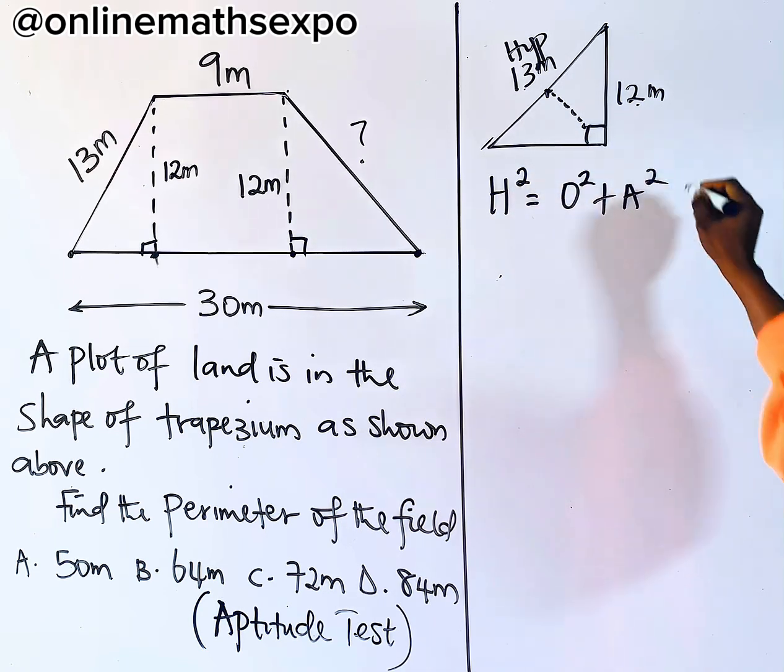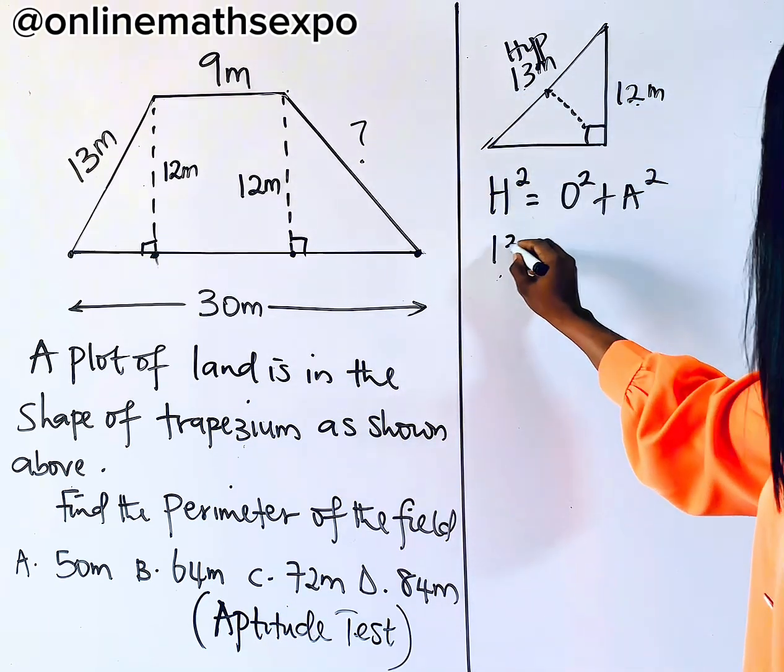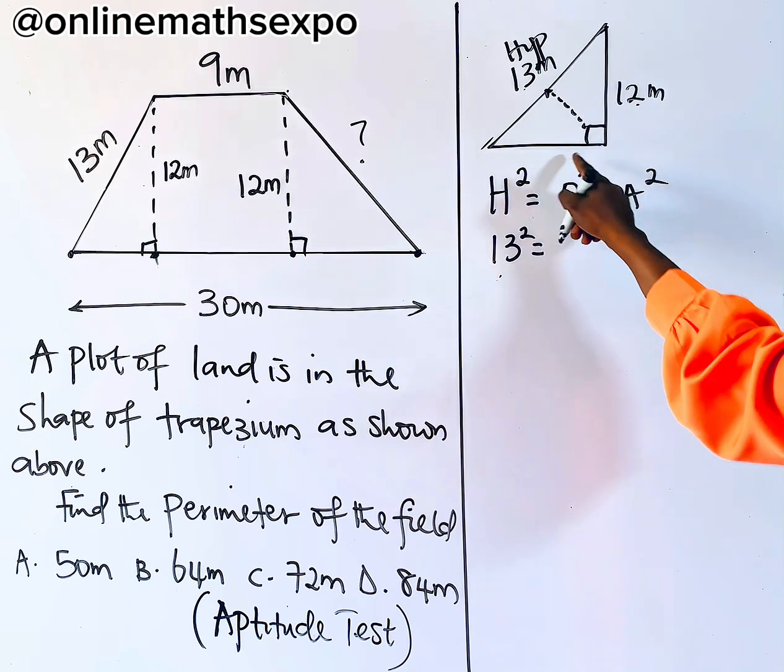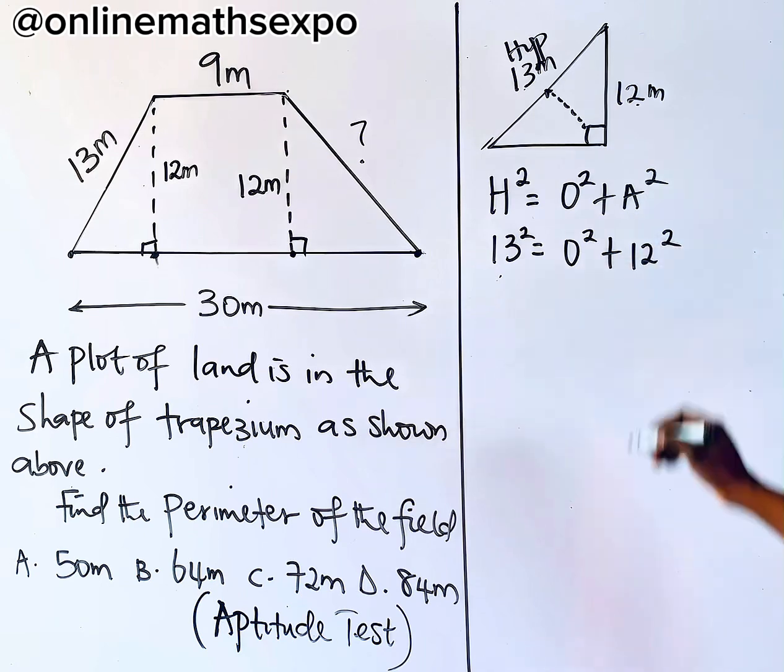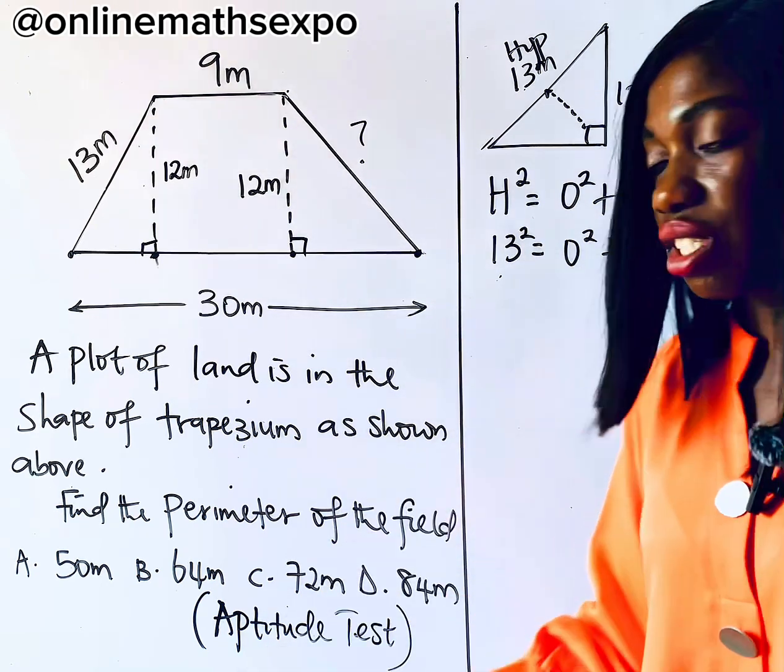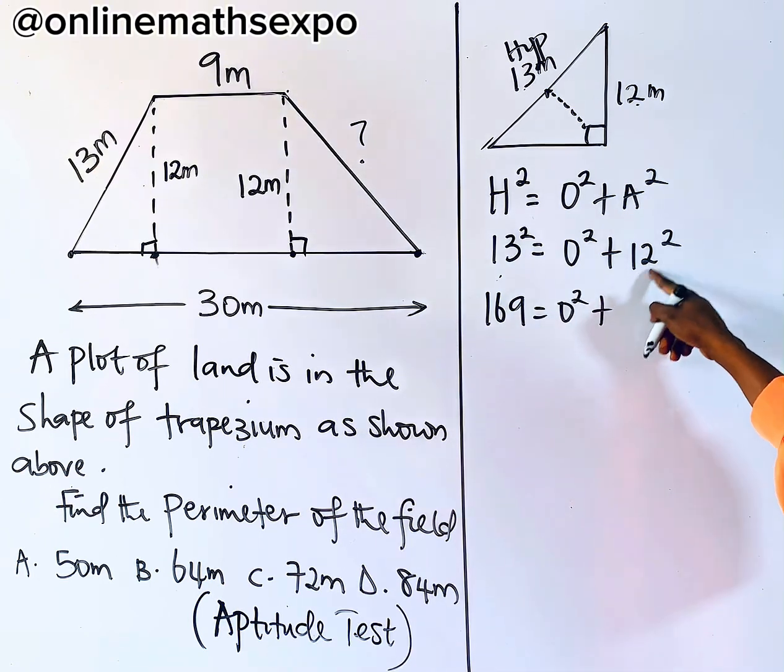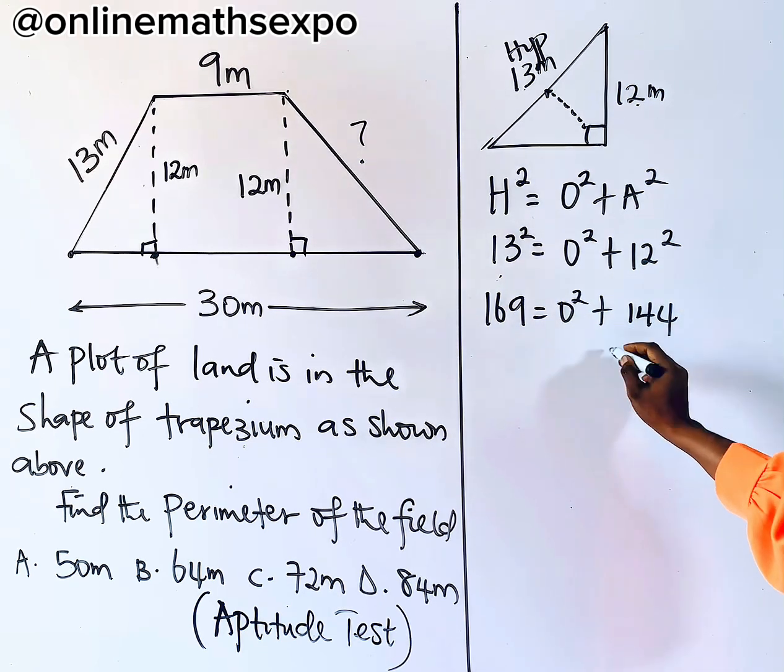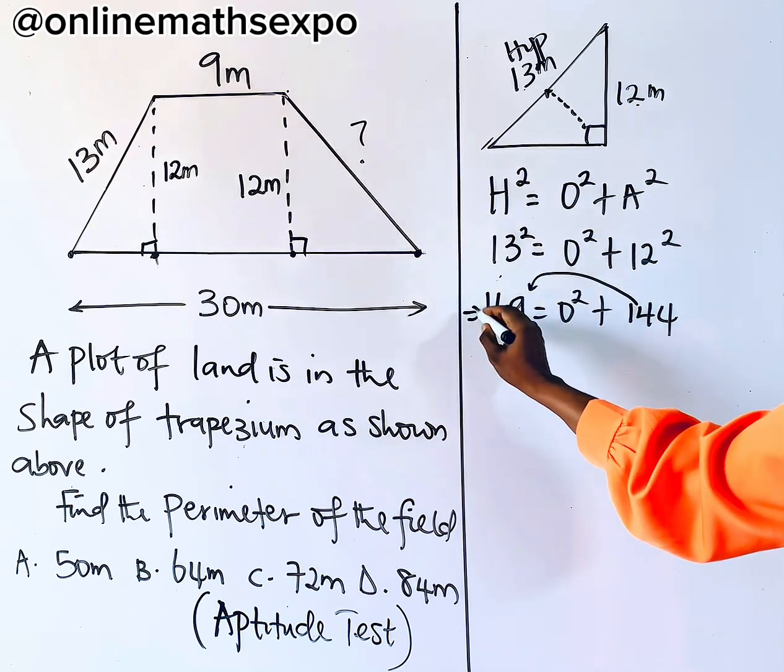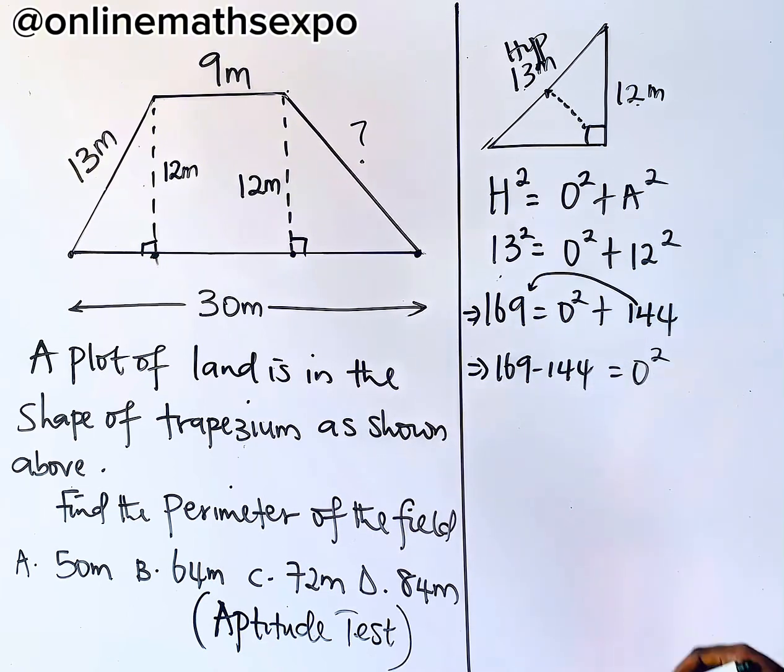So the Pythagorean theorem states that the hypotenuse side squared is equal to the square of the two remaining sides, which is the opposite plus the adjacent. I hope you are with me. So to find this, we are going to have, this will be 13 squared is equal to, we don't know this part, so it's O squared plus this is 12 squared. I hope you are with me. 13 squared is 13 multiplied 2 times. And that will give you 169 is O squared. This is 12 multiplied 2 times to give us 144. Now, to get this, you need to remove this. It's positive, so you subtract. So we are going to have 169 minus 144 is equal to O squared.